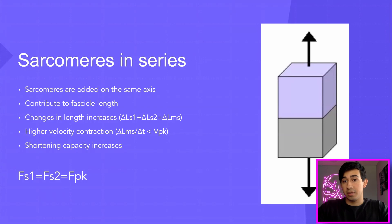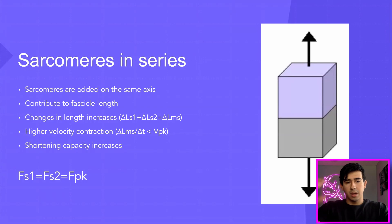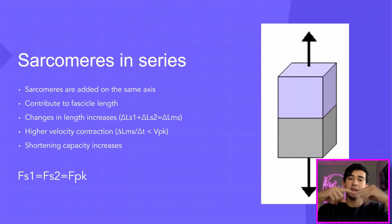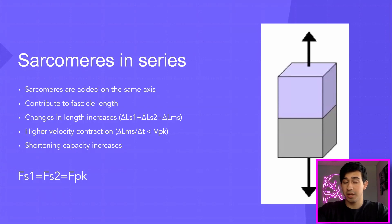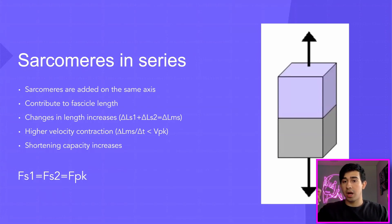The force equation for sarcomeres in series is similar, but the summation symbol flips to an equals sign: the force in sarcomere one equals the force in sarcomere two, which equals the entire force of the muscle. Force capacity isn't necessarily changing here — rather, it's the higher velocity contraction that's changing because the length of the muscle is changing. The force relatively stays equal because sarcomeres tied end to end transmit equal force across, which can be measured at the end of the myofibril.